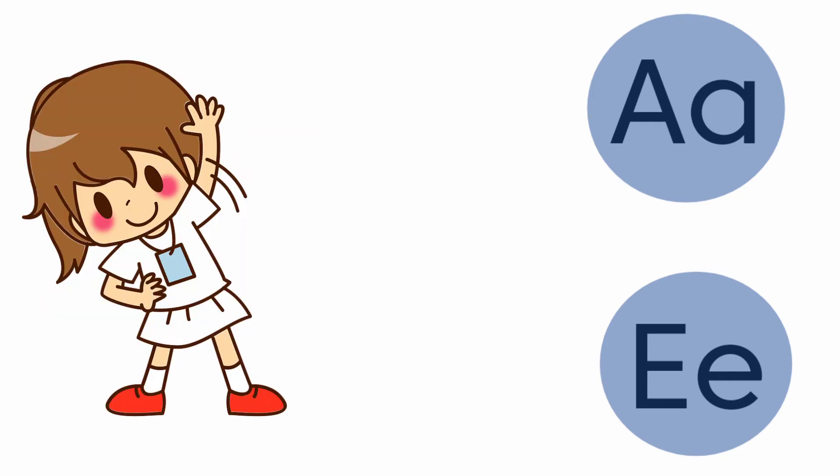Next one — exercise. The beginning sound of the picture 'exercise' is 'eh'. The letters they have given are A and E. The sound of the letter A is 'a', and the beginning sound of the picture 'exercise' is 'eh' — both are different sounds, it does not match. Now the letter E — the sound of the letter E is 'eh', and the beginning sound of the picture 'exercise' is 'eh' — both are same sounds. So we are going to match the letter E.